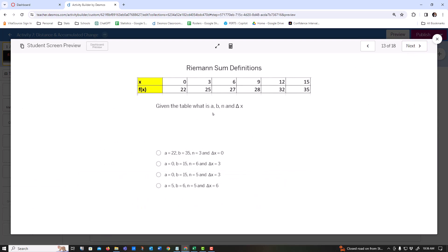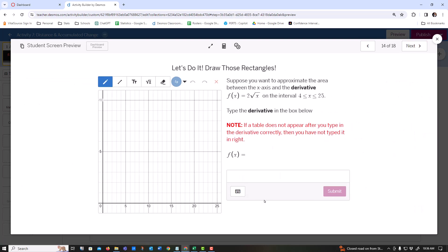As I mentioned, A is your starting value, B is your ending value, N is the number of subintervals, and the change in x is how your x is changing.